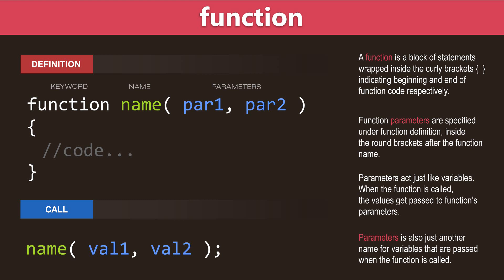This is how we call the function: we specify its name and the round brackets with the optional parameters, which are going to be values that are passed to these variables. We end the statement with a semicolon. You can think of function parameters as just like variables which are going to be passed to the function.